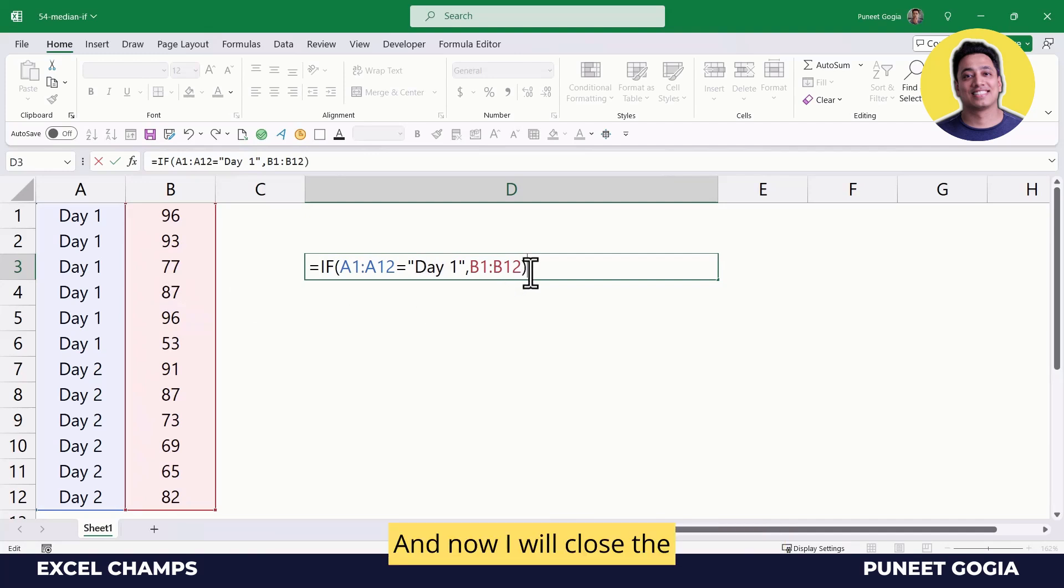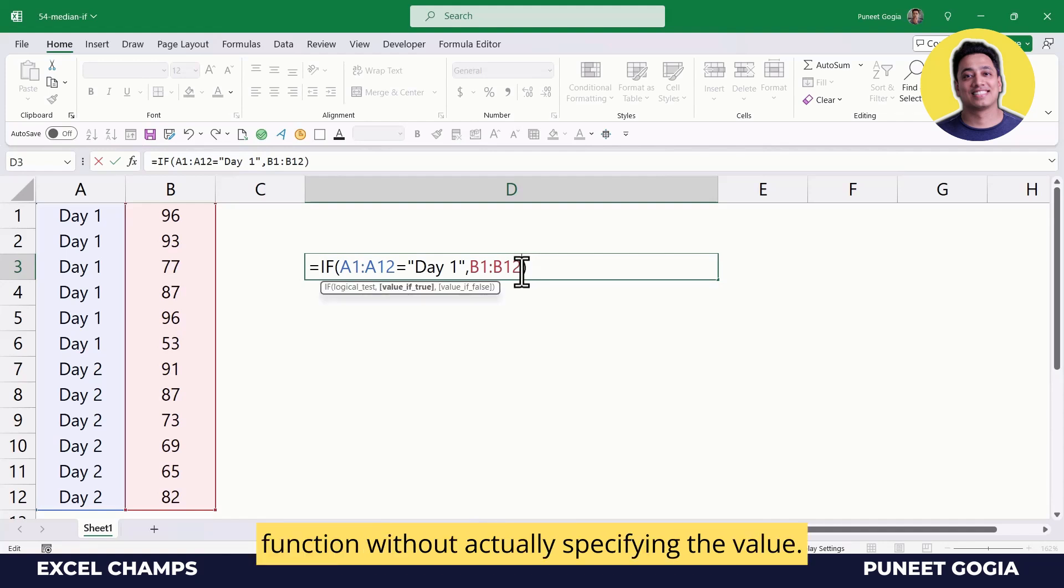Now I'll close the function without actually specifying the value if false, because I don't need to get any value if the condition is false. In the end, I'll wrap this function with the MEDIAN function.